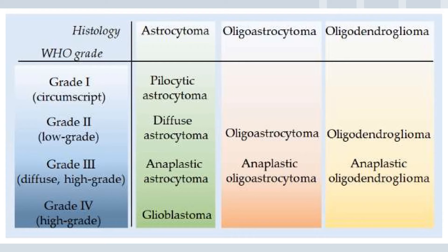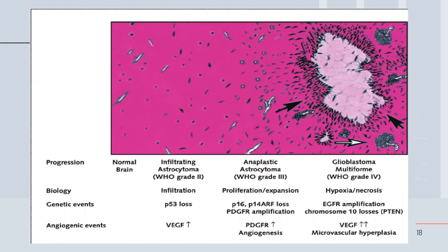By histology: grade one lesions include pilocytic astrocytoma. Meningioma is grade two along with low-grade diffuse astrocytoma, oligoastrocytoma, and oligodendroglioma. Grade three includes diffuse high-grade tumors like anaplastic astrocytoma, oligoastrocytoma, and oligodendroglioma. Grade four is the glioblastoma multiforme.